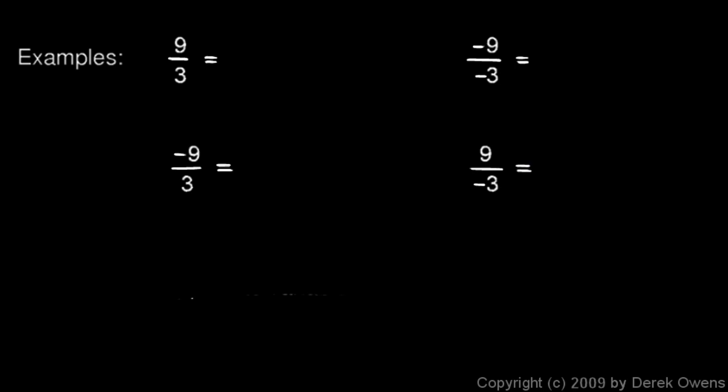So, here are some examples. 9 divided by 3. Obviously, we know that 9 divided by 3 is 3. Well, negative 9 divided by negative 3 is also 3. Again, I take note that both of these numbers are negative. They both have the same sign, so the result ends up being a positive 3.